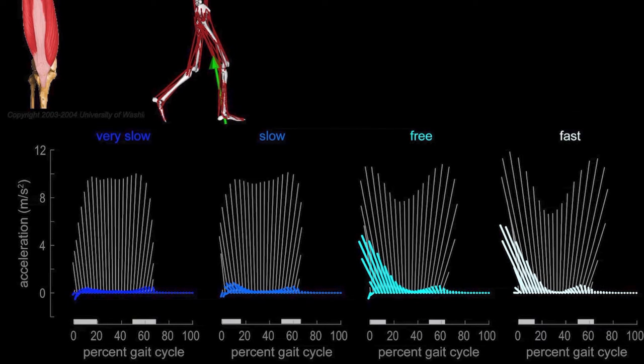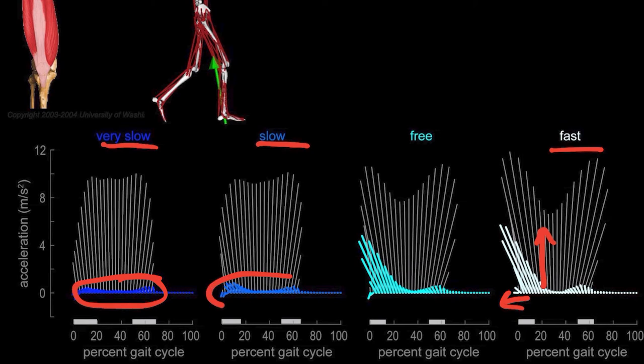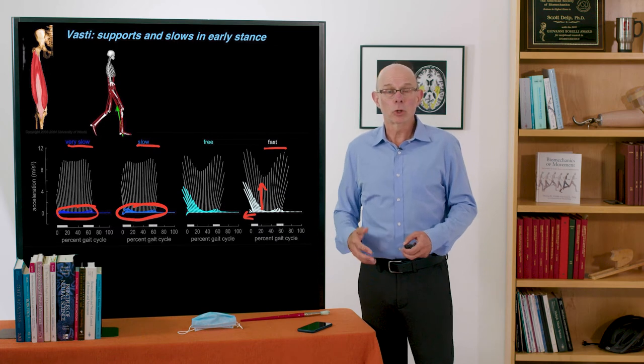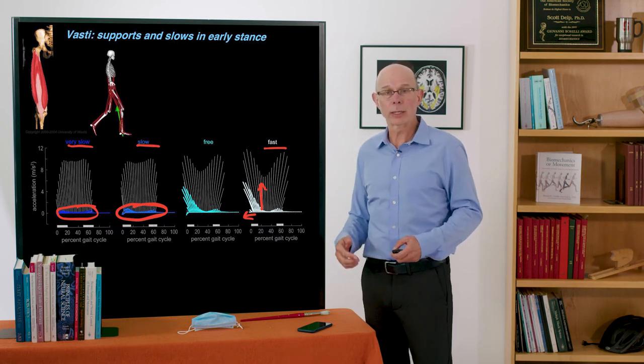VASTI excitation goes up with speed and produces a larger vertical and horizontal ground reaction force. Interestingly though for VASTI during slow and very slow walking it does almost nothing. The excitation of the muscle goes way down, the force goes way down, and it doesn't produce much vertical support or backward acceleration.